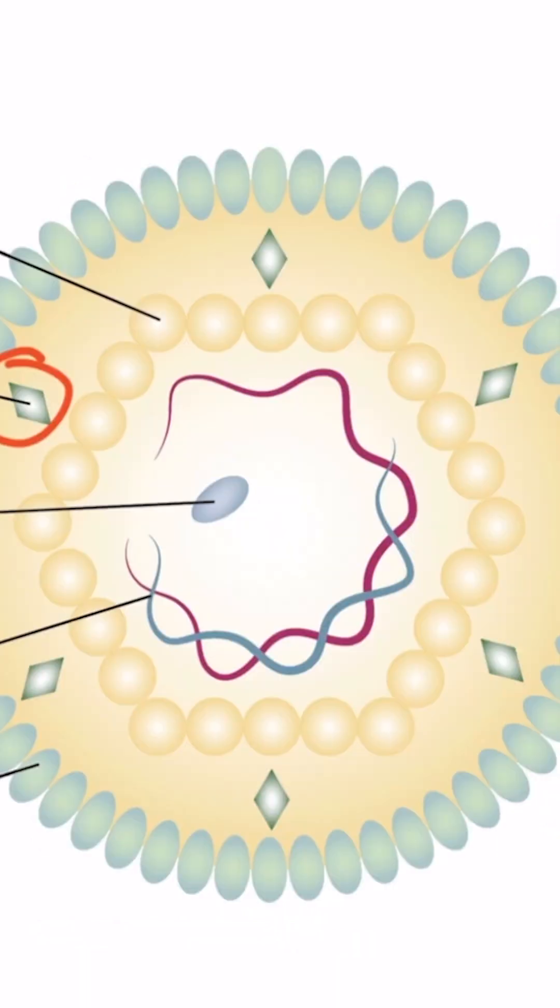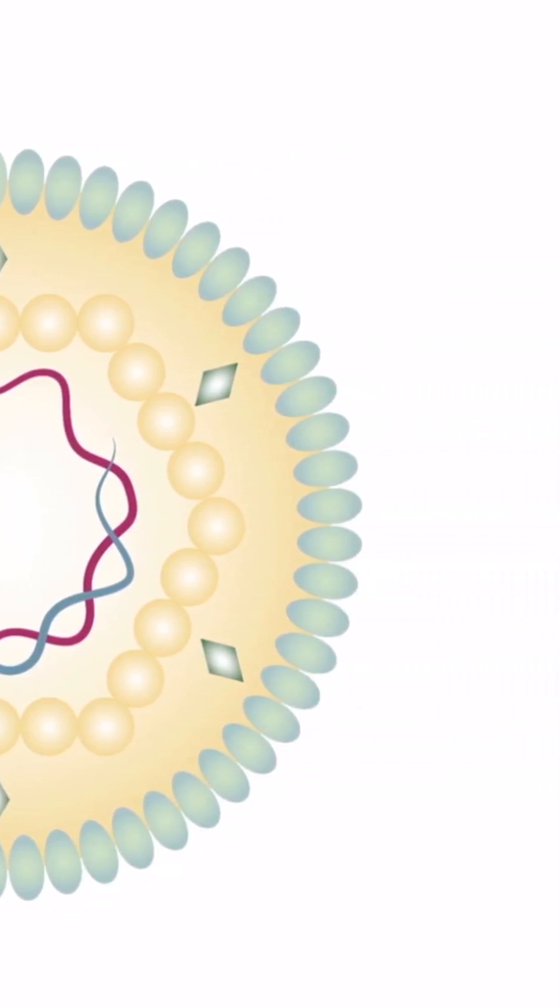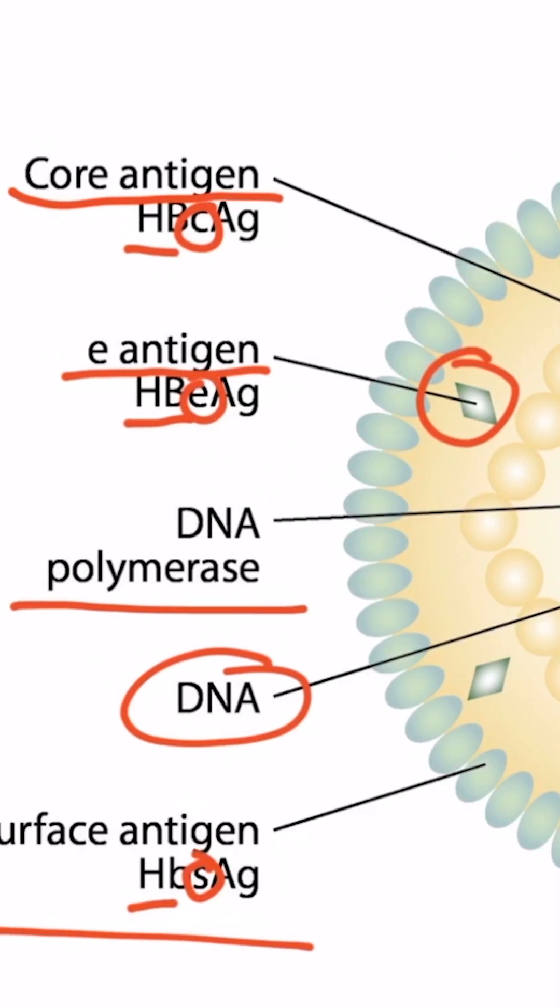Within the capsid, we have the genome, or DNA, which you can see has this circular and partially double-stranded appearance. So there's two strands here, DS for double-stranded, and then right here, it's single-stranded, hence partially double-stranded. And then here's also the DNA polymerase.